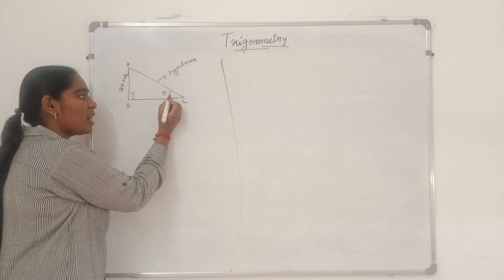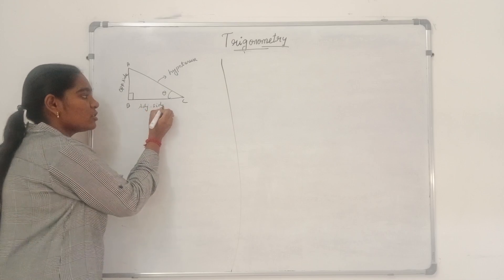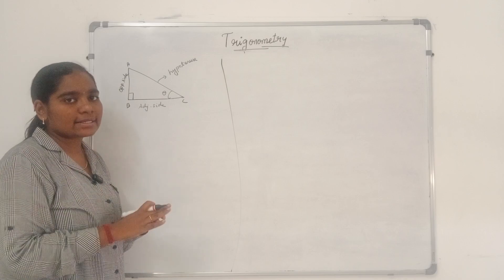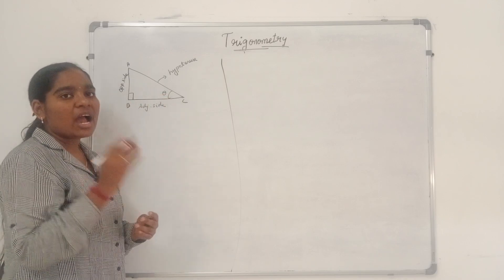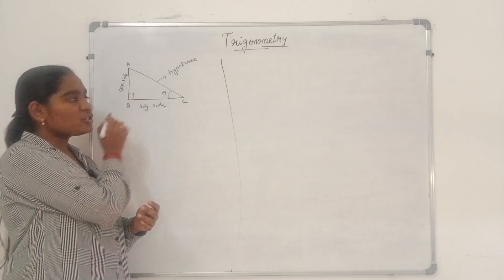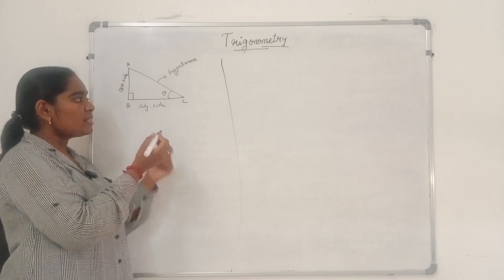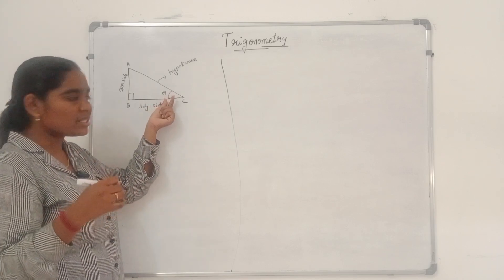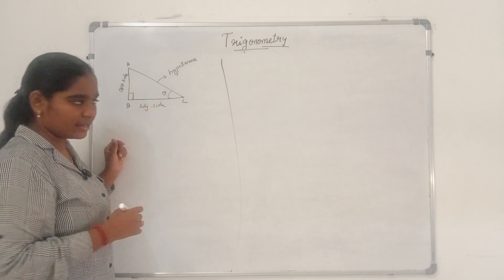And adjacent side is this one. So in a right-angled triangle, opposite side and adjacent side are based on theta. And hypotenuse is always based on the right-angle — the side opposite to the right-angle is hypotenuse. The side opposite to theta is the opposite side, and the side adjacent to theta is the adjacent side.